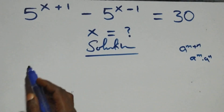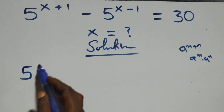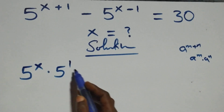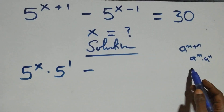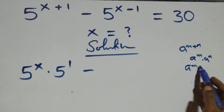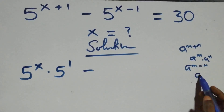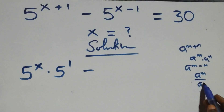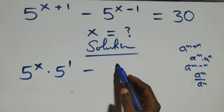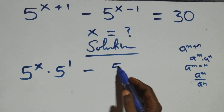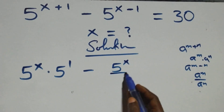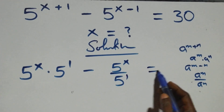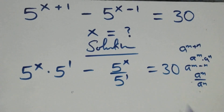Here we have 5 raised to power x times 5 raised to power 1. Also, this follows when we have a raised to power n minus n, which is the same thing as a raised to power n over a raised to power n. So here we have 5 raised to power x over 5 raised to power 1, and this equals 30 on the right side.